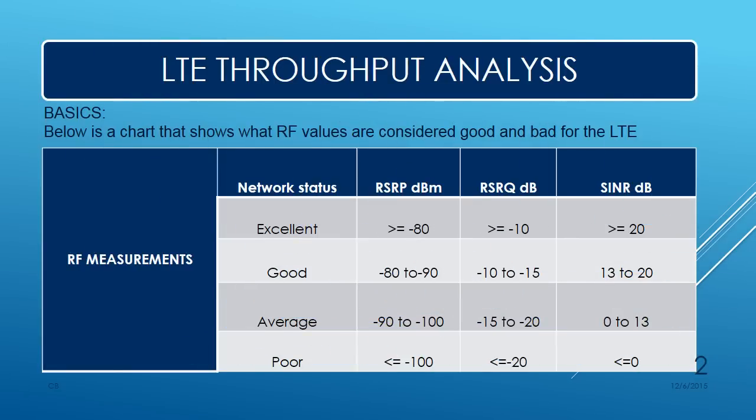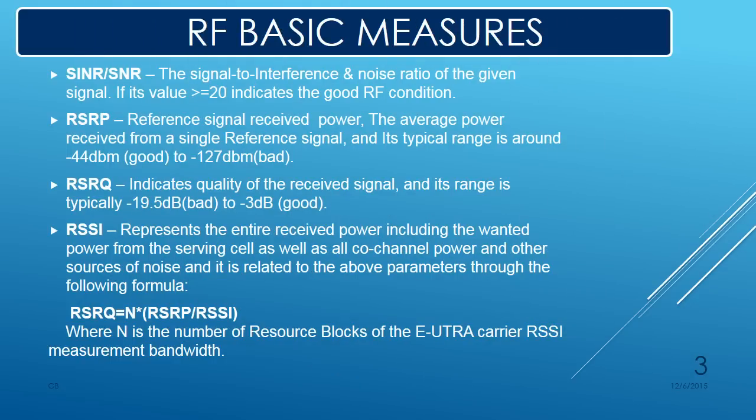Verifying the RF status at a place is the first step in analysis. I have shown the reference values here. You can take these reference values to say the network condition at a place as excellent, good, average, or poor. I'm not going to talk much about these fundamentals as an RF engineer knows these basics. Here are just some expansions and definitions of RSRP, RSRQ, SINR, and all these things.